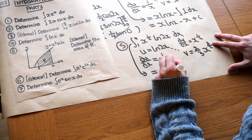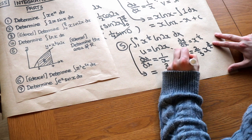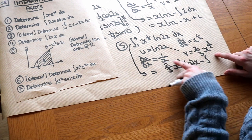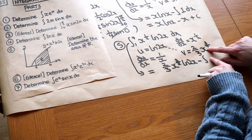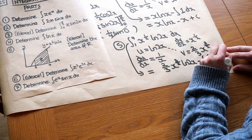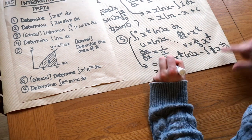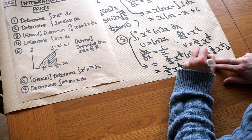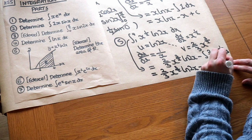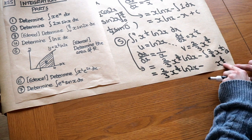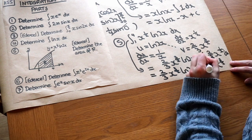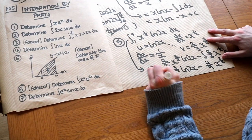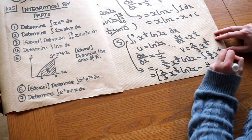Integrating ⅔x^(½): add 1 to get x^(3/2), divide by 3/2 (multiply by ⅔), giving ⅔·⅔ = 4/9. So the result is ⅔x^(3/2)·ln(2x) − (4/9)x^(3/2). Since this is definite integration, there's no plus c. We put this in square brackets with limits 4 and 1.